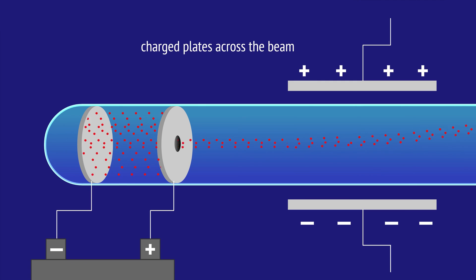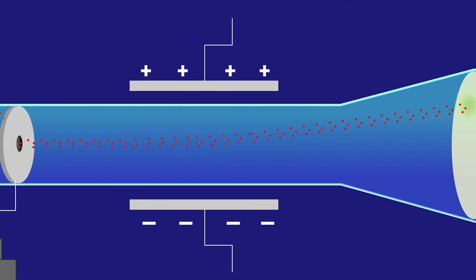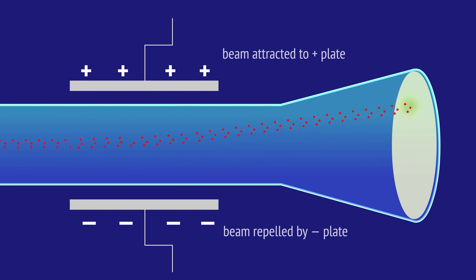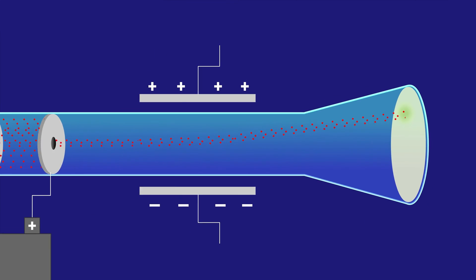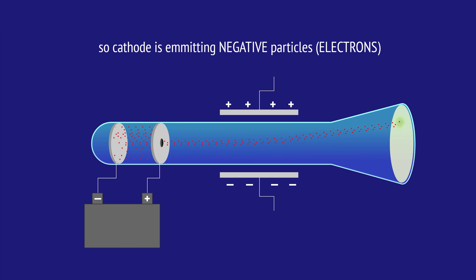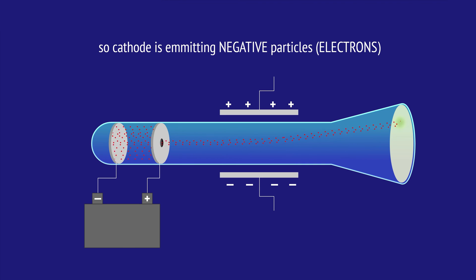When oppositely charged plates were placed above and below the beam, the ray would bend towards the positive plate and away from the negative plate. The attraction to the positive plate led Thomson to believe the beam was composed of negatively charged particles — what we now call electrons.